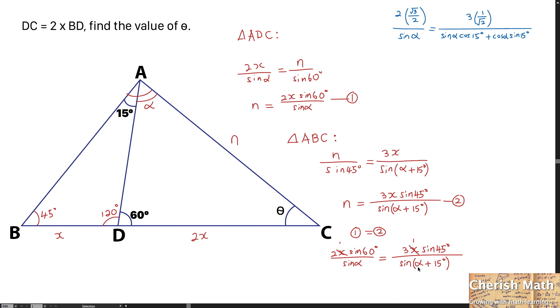For sine of alpha plus 15 degrees, I'm going to expand it using the trigonometric addition formula. That becomes sine alpha cosine 15 degrees plus cosine alpha sine 15 degrees. By doing cross multiplication, this is the result.